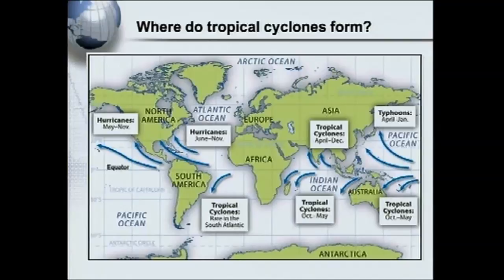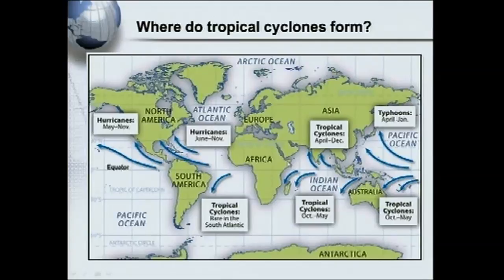Where do tropical cyclones form? Here we've got the paths of the different tropical cyclones. Remember that tropical cyclones usually form in the late summer to autumn. That is why, in the southern hemisphere, we get them at different dates than in the northern hemisphere. Now, what are the weather patterns associated with your tropical cyclones? Remember we had a look at the weather patterns associated with a mid-latitude cyclone — please don't get mixed up.